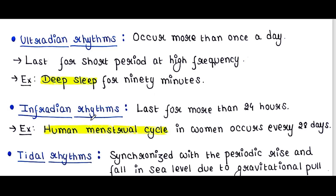Next is infradian rhythms. Infradian rhythms last for more than 24 hours. An example includes the human menstrual cycle in women, which occurs every 28 days.